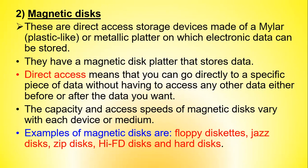Magnetic disks are direct access storage devices made of a plastic or metallic platter on which electronic data can be stored. They have a magnetic disk platter that stores data. Direct access means you can go directly to a specific piece of data without having to access any other data before or after the data you want. The capacity and access speed of magnetic disks vary with each device.